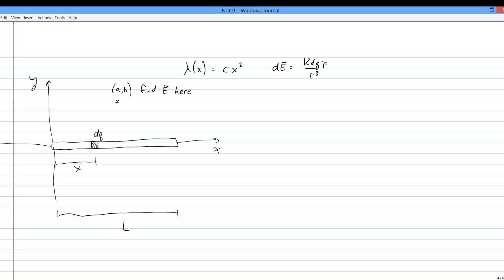The usual trick is to say that some infinitesimal chunk of linear charge dq can be written as a density times an infinitesimal chunk of length. So dq equals lambda times dl, where in this situation, dl can be dx.